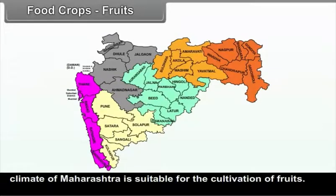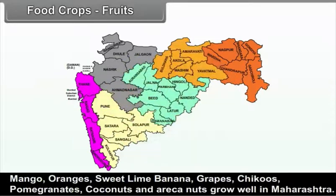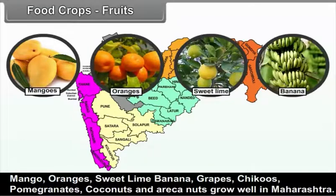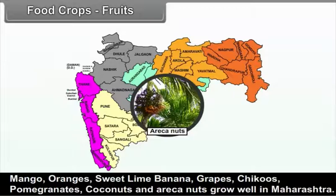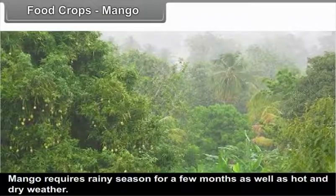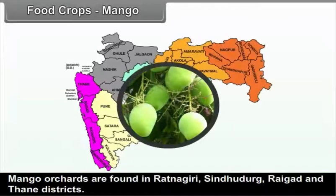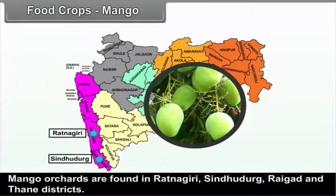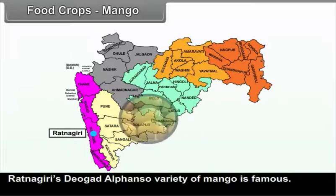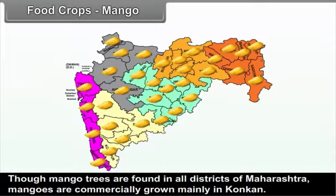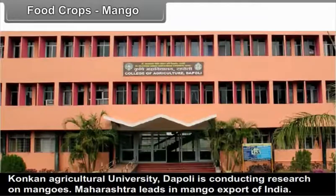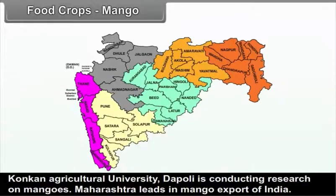The climate of Maharashtra is suitable for the cultivation of fruits. Mango, oranges, sweet lime, banana, grapes, chikus, pomegranates, coconuts, and areca nuts grow well in Maharashtra. Mango requires a rainy season for a few months as well as hot and dry weather. Mango orchards are found in Ratnagiri, Sindhudurg, Raigad, and Thane districts. Ratnagiri's Devgad Alphonso variety of mango is famous. Maharashtra leads in mango export in India. Konkan Agricultural University, Dapoli, is conducting research on mangoes.